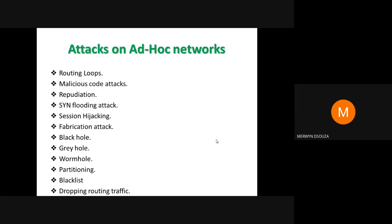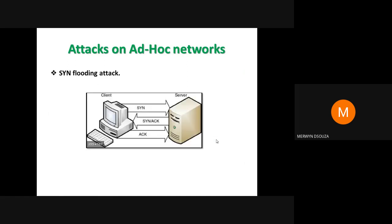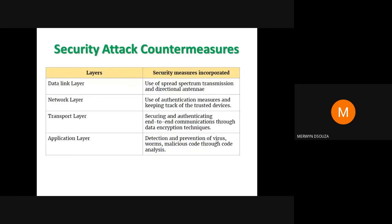These were the different attacks we looked at yesterday. Now let's look at what can be done to prevent these attacks. At the different layers, some kind of security measures could be employed so that the attacks could be prevented or reduced — maybe not completely eliminated, but we can reduce or even prevent the attacks. At the data link layer, we can employ something known as spread spectrum.